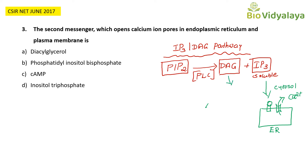DAG (diacylglycerol) activates protein kinase C. The second messenger responsible for opening calcium ion pores is IP3 — inositol triphosphate. So the answer is option D. Remember: cyclic AMP activates protein kinase A, and DAG activates protein kinase C. Answer is option D: inositol triphosphate (IP3).